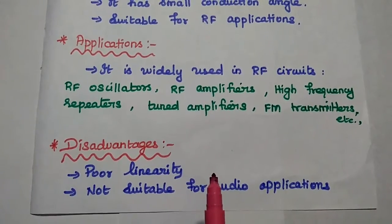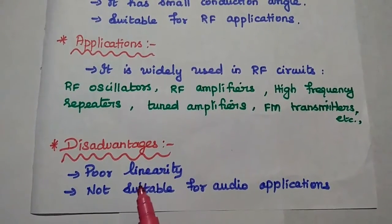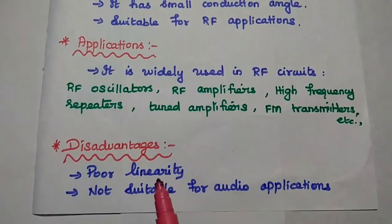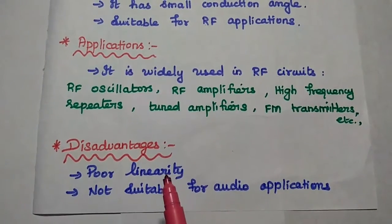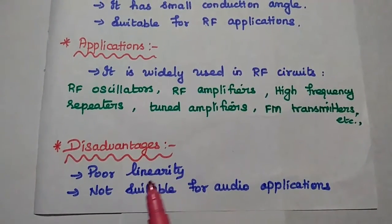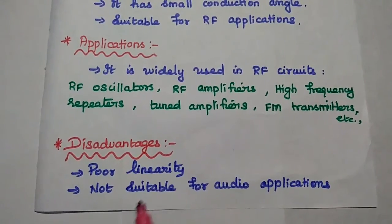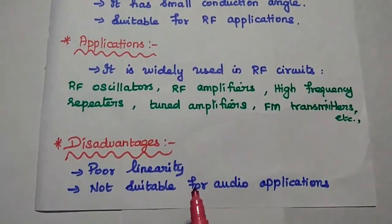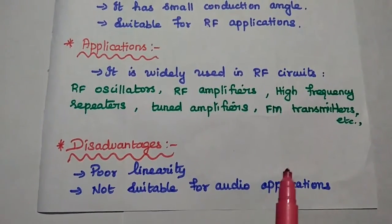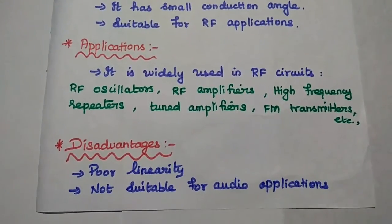The major disadvantages are: it provides very poor linearity. Class C amplifier is a non-linear circuit, so it has poor linearity. It is not suitable for audio applications and is only suitable for radio frequency applications.